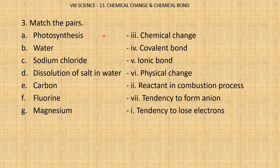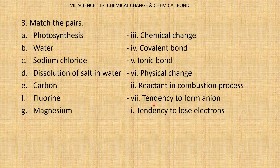Match the pairs — the correct answers are already written. Photosynthesis is a chemical change. Water forms a covalent bond; sodium chloride forms an ionic bond. Dissolution of salt in water is a physical change. Carbon is a reactant in the combustion process. Fluorine has a tendency to form an anion (negative ion) because it has seven electrons in the outermost shell and wants one more. Magnesium has a tendency to lose electrons.